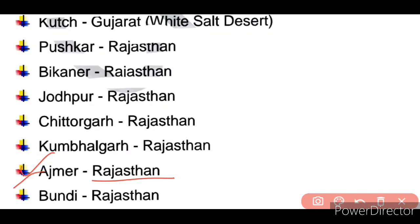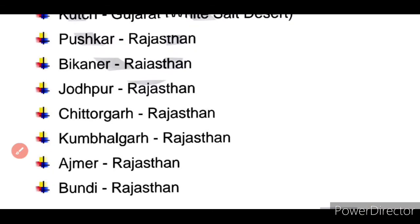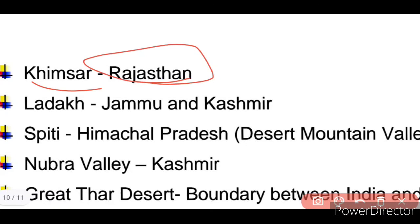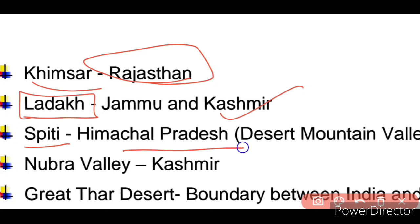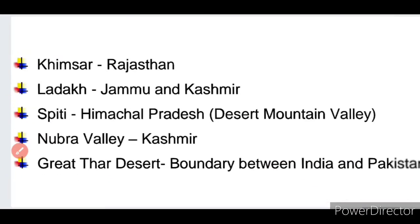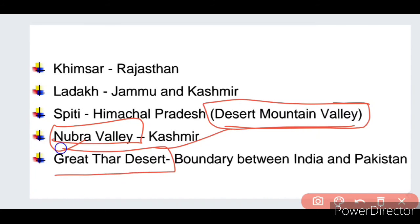In Ladakh, there is also a desert in Jammu and Kashmir. In Himachal Pradesh, there is also a desert. In Nubra Valley, there is a desert in Kashmir — a question often asked is where Nubra Valley is located, and the answer is Jammu and Kashmir. The Great Thar Desert forms the boundary between India and Pakistan.